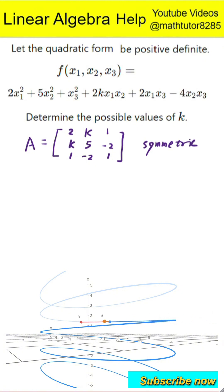To check whether the quadratic form is positive definite, we apply Sylvester's criterion, which requires that all the leading principal minors of the matrix must be strictly positive.